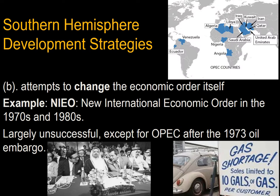A second strategy for development is to change the economic order itself. An example is the NIEO — the New International Economic Order — established in the 1970s. These are largely unsuccessful, as it is simply not logical that small, poor countries can change the economic system to redirect profit flows towards them. An exception is OPEC. After the 1973 oil embargo, oil-exporting countries renegotiated their contracts with large Western corporations and were able to increase their profits three-, four-, or five-fold, significantly increasing their revenue.